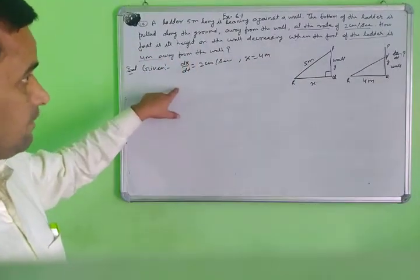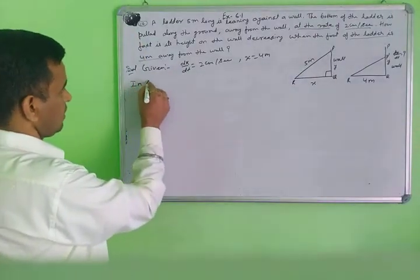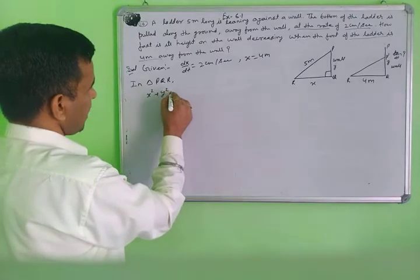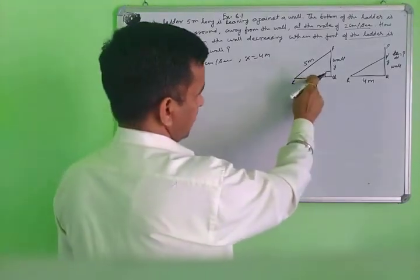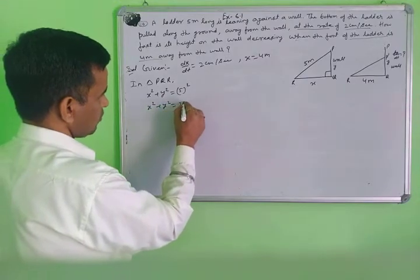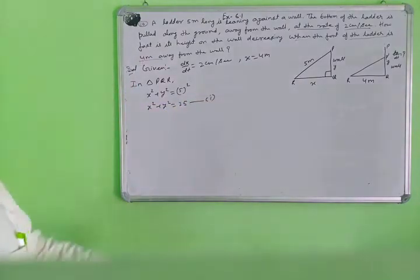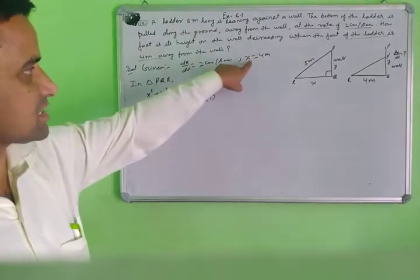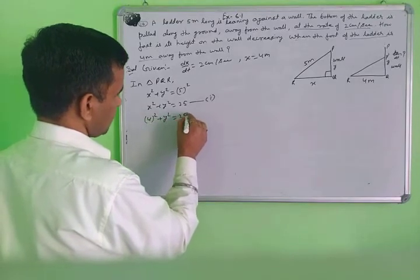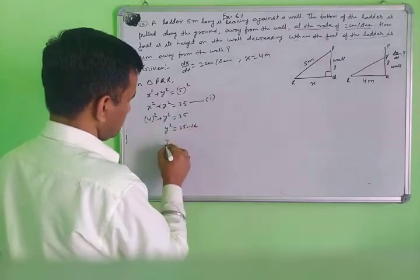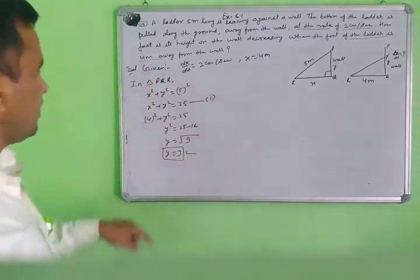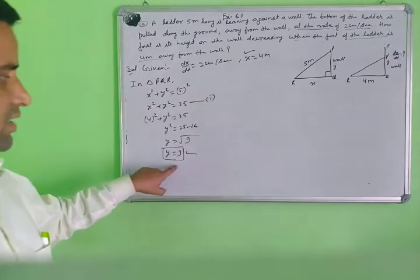This is a right triangle PQR. Using the Pythagoras theorem: x squared plus y squared equals 5 squared, so x squared plus y squared equals 25. This is equation one. Now putting the value of x equals 4: 16 plus y squared equals 25, so y squared equals 9, and y equals 3. When x equals 4, the value of y is 3.